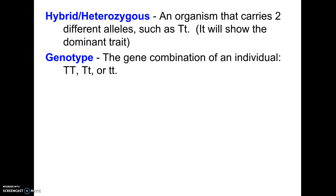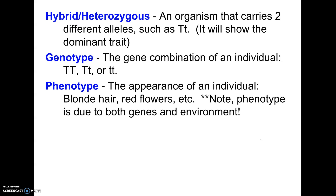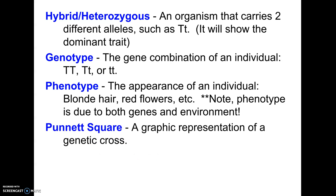Heterozygous — also called hybrid — means the organism has big T, little t: one big letter and one little letter. In a regular Mendel cross, that organism would show the dominant trait. The genotype is the gene combination for a trait: big T big T, big T little t, or little t little t. The phenotype is what the organism will physically look like — the appearance, like blonde hair, tall, short, red flowers, whatever it is. Keep in mind that environment plays a role too. Arctic foxes have the code for brown fur, but that gene is only triggered above certain temperatures — so if kept at low temperatures, the fox is actually white, not because its genes code for white but because the genes are only activated by certain temperatures.